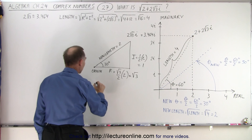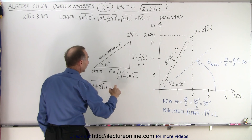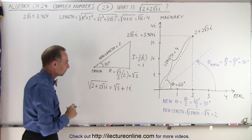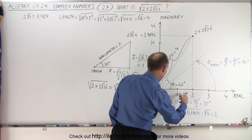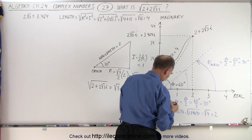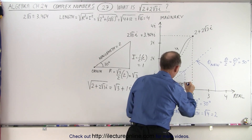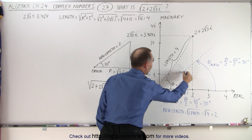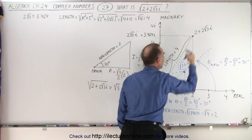Which means that the square root of the complex number 2 plus 2 times the square root of 3 times i is equal to the real part, which is the square root of 3, plus the imaginary part, which is 1 times i. The square root of 3 is about 1.7, so that sets us to the real part at about 1.7. And then we get 1 over here. So this here would be our square root of the original number, which is the square root of 3 plus 1i.